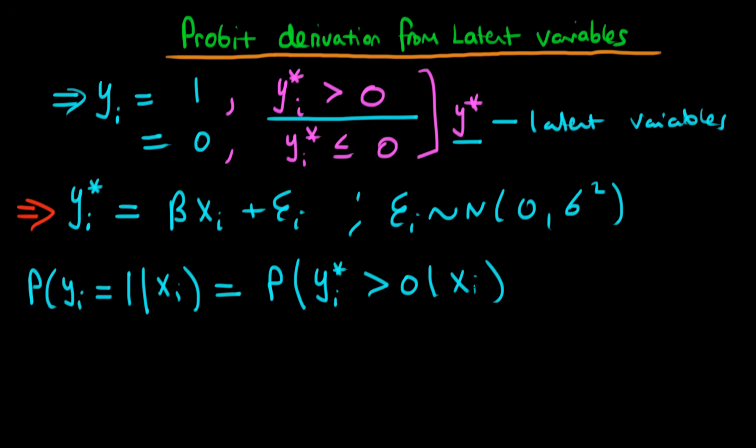And furthermore, we already have an expression for yi star. We have it from this relationship up here. So this probability is just equivalent to the probability that beta xi plus epsilon i is greater than 0 given that we have xi. And I can just rearrange this inequality here. There's nothing wrong with doing that, as long as it still says exactly the same thing. So we can write this as the probability that epsilon i is greater than minus beta xi given that we have xi.